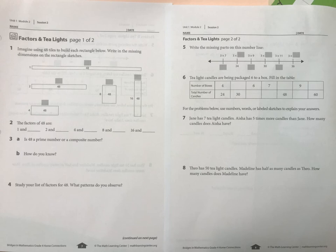Okay, let's have a quick look at this homework from Bridges Math, grade 4. This is called Factors and T-Lights. We're using 48 tiles to make rectangles and we're gonna write in the missing part of each rectangle.